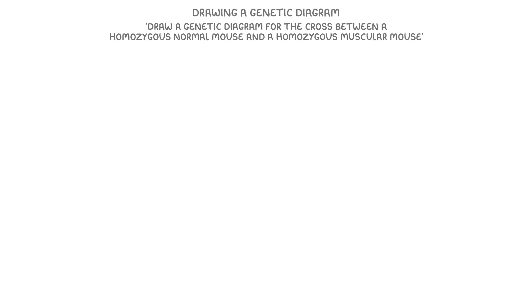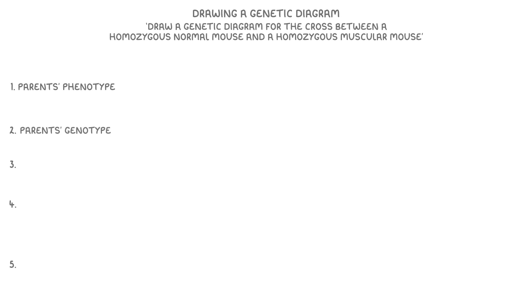Whenever you have to draw a genetic diagram, there are five main things you need to look at, and you look at each of them in turn. First you find the parents' phenotype and genotype, which they'll often give you in the question. Then you use that to find out all of the gametes' genotypes, and then finally use those to find the offspring's genotypes and then phenotypes.